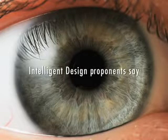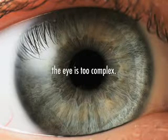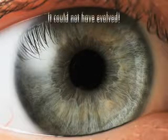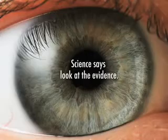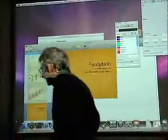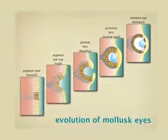Intelligent design proponents say the eye is too complex. It could not have evolved. Science says look at the evidence. Scientists like me see complex structures like the eye having arisen from natural processes through small individual steps rather than from a single large step.